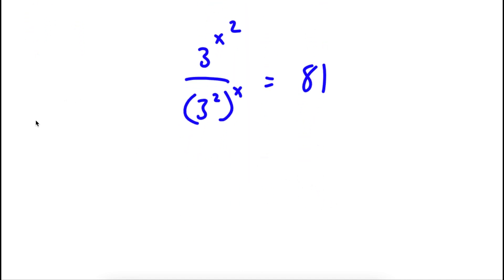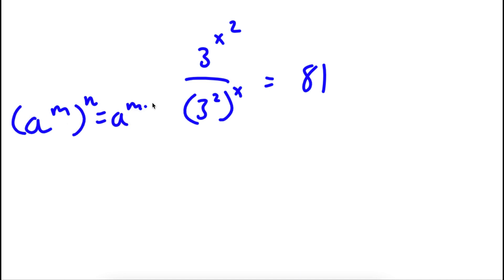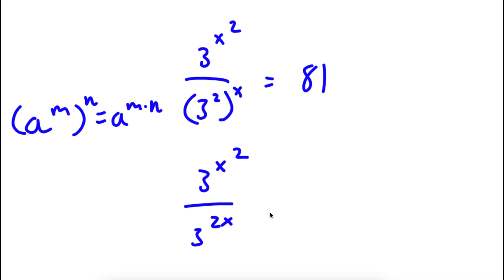Now, if I have something in the form a to the power of m to the power of n, this is equal to a to the power of m times n. So 3 to the power of 2 to the power of x is going to equal 3 to the power of 2 times x, which is the same thing as 2x.